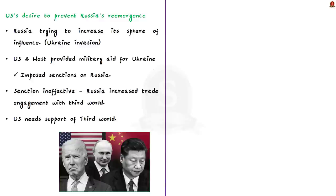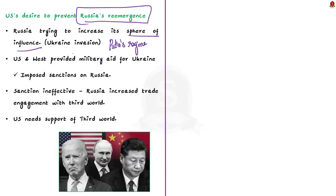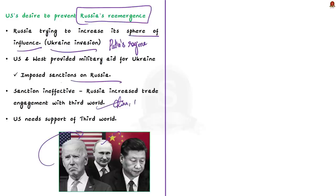The second reason is the US desire to prevent the re-emergence of Russia. After the collapse of the USSR, Russia's sphere of influence reduced. But under Putin's regime, Russia is trying to recapture its old dominant position, which is why Putin invaded Ukraine. To counter Russia, the West led by the US provided military aid to Ukraine and imposed sanctions against Russia to cripple its economy. However, Russia started increasing its trade with China, India, and other Global South countries. So for the sanctions to be effective, the US needs the support of the Global South — increasing their bargaining power.